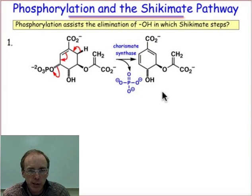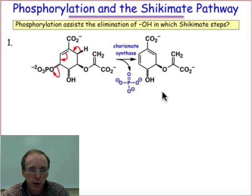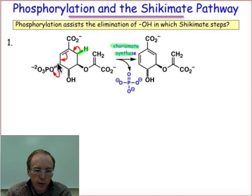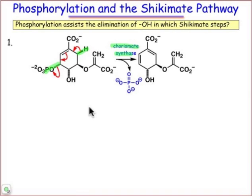Remembering that phosphorylation is nature's way of transforming a hydroxyl group into a good leaving group, you can find a couple of examples of this strategy in the shikimate pathway. I won't spend much time on this one. I've already talked about it just a little bit, but the Chorismate Synthase is this 1,4 addition where the phosphate group is lost to introduce a new degree of unsaturation into the 6-membered ring.